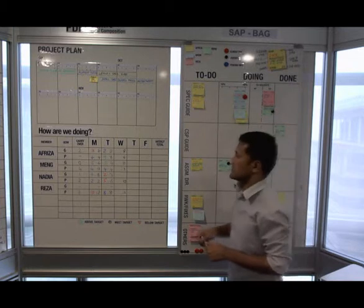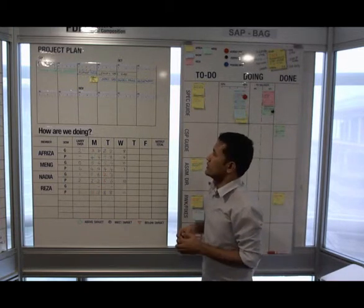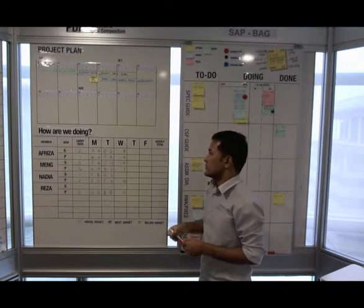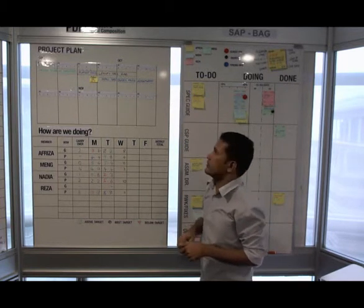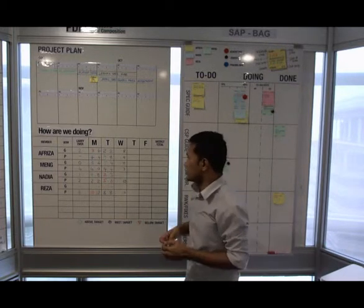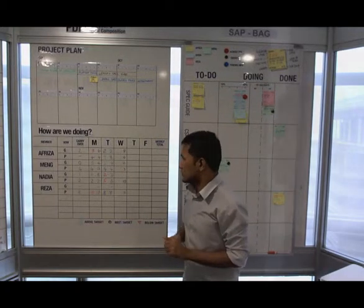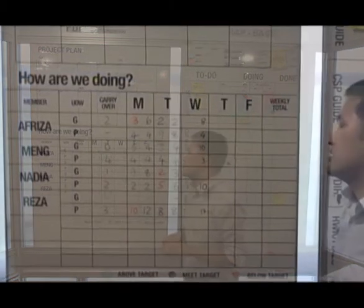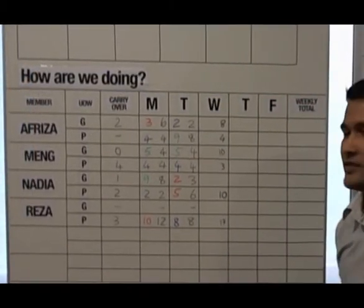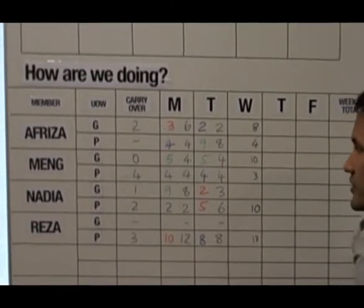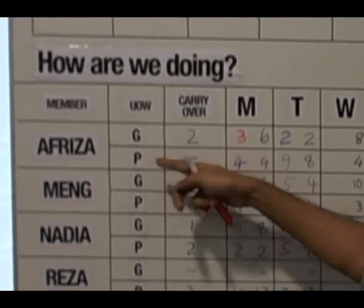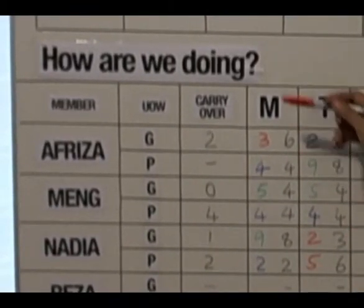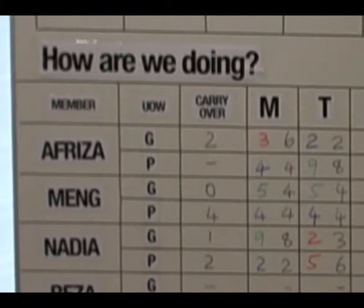We're going to move to the next board, where we track our project on a daily basis, and we also have a project plan where we track on a monthly basis. For our daily tracker, we track our day-to-day activity based on two units of work: graphic (G) and page (P). All members are listed here, and we have one column for carryover, where we put work carried over from the previous week.